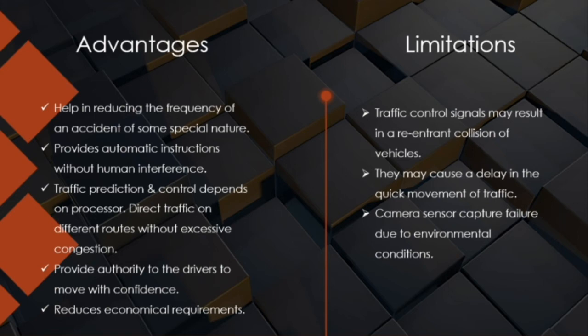We can identify the density in a particular area and traffic prediction can be done easily. However, there are certain limitations as well. The major limitation is errors in image capture due to weather conditions — in rainy seasons or areas with snow, proper images cannot be captured and comparison becomes difficult. The second major limitation is the processing time required to process images; if processing takes too long, there is a delay in giving the proper indication.